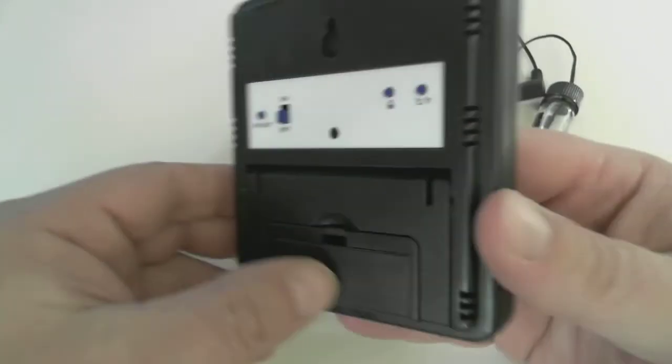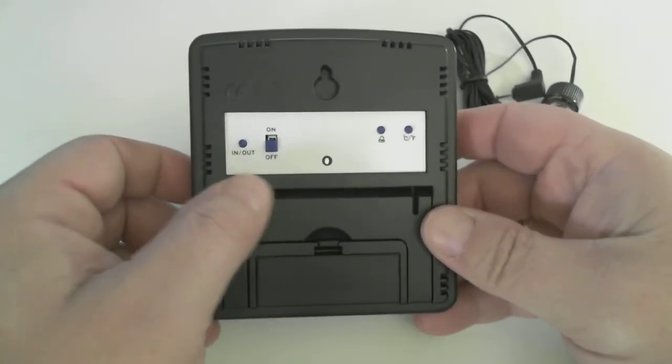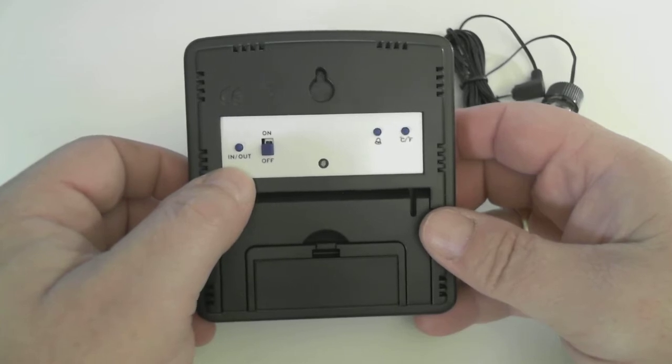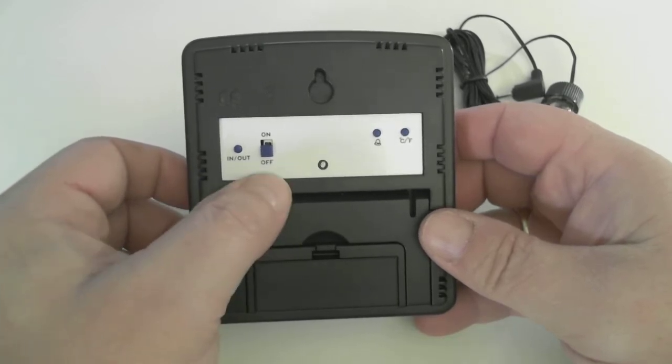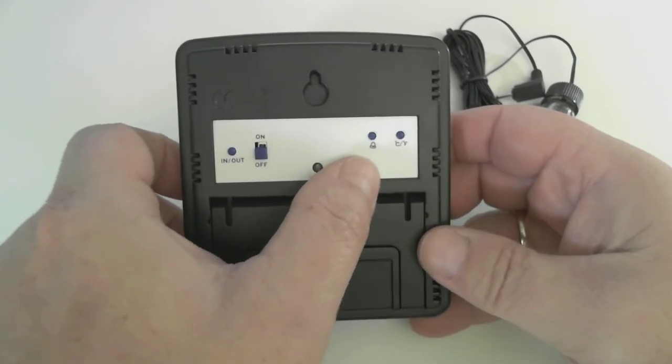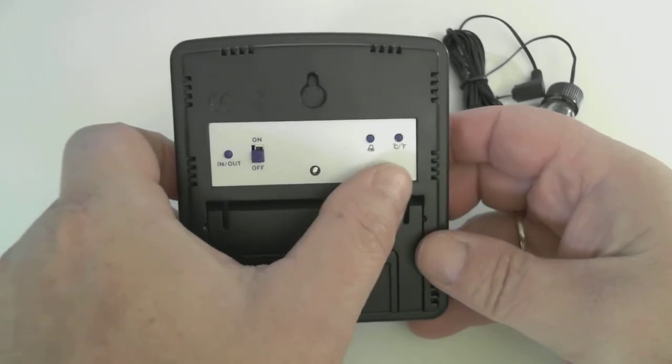Turn the unit over. On the back, we have three buttons and a switch. The far left button selects either the internal or external temperature probe, power on-off switch, audible alarm deactivation button, and Celsius and Fahrenheit selection switch.